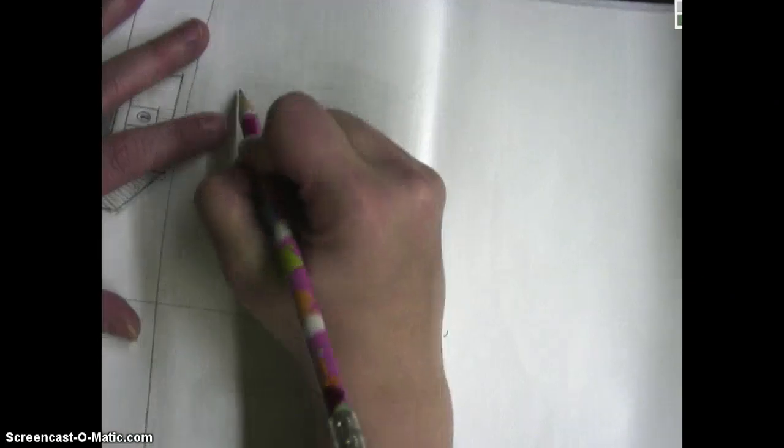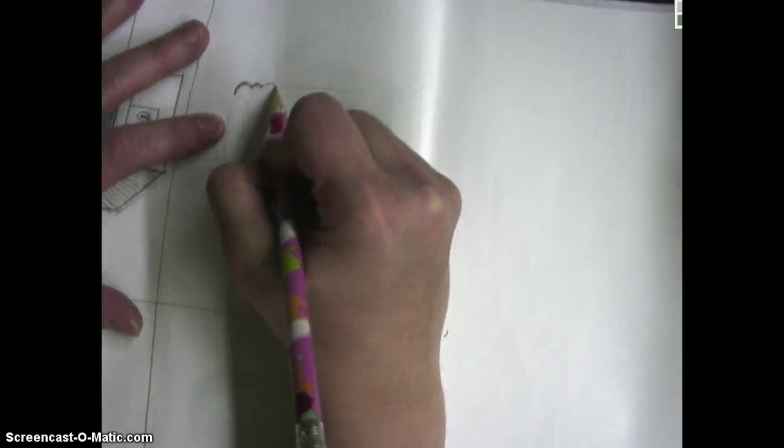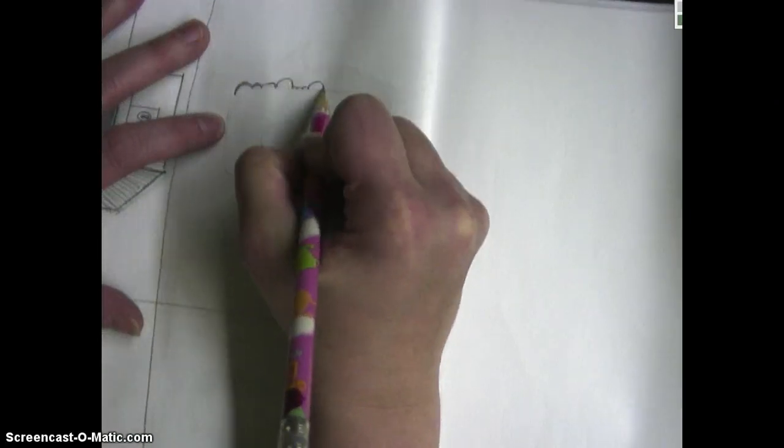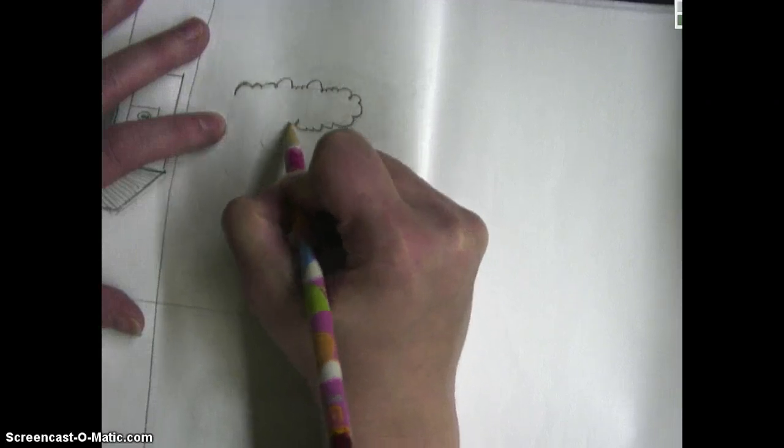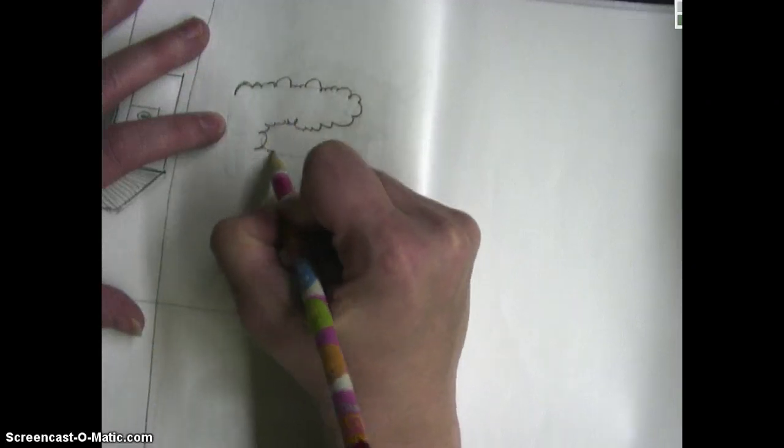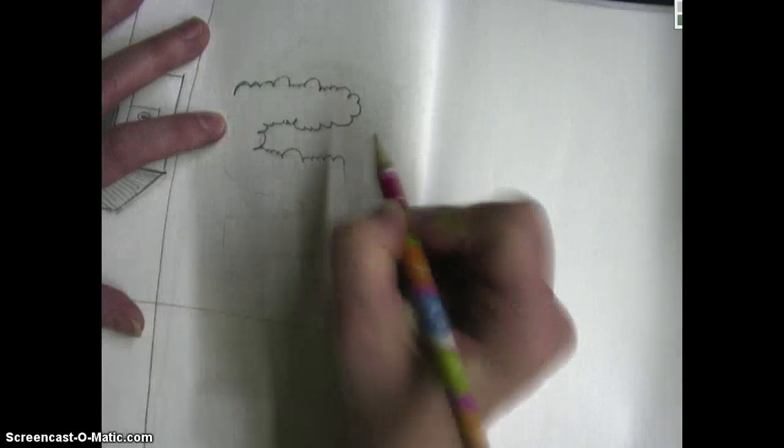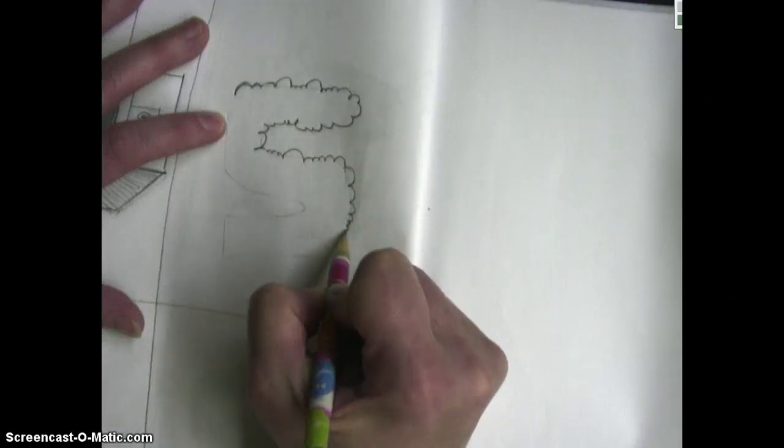So what you're going to be doing is making a repeating pattern of bumps. Some are large, some are small. But you're just going through the whole thing, going all the way around. Some can be close together, some can be far apart. It's up to you.